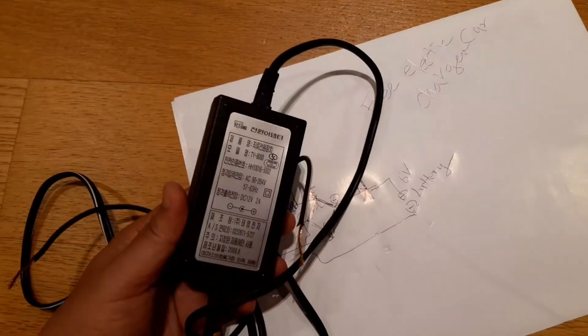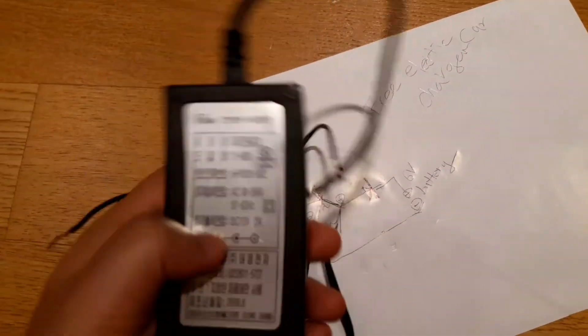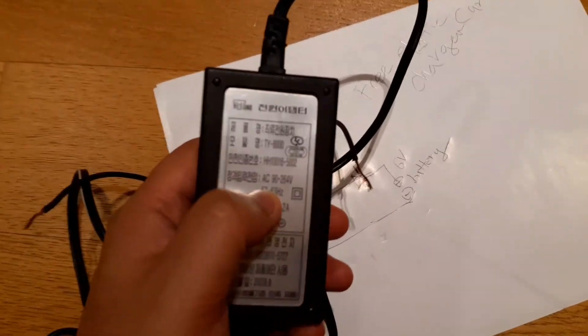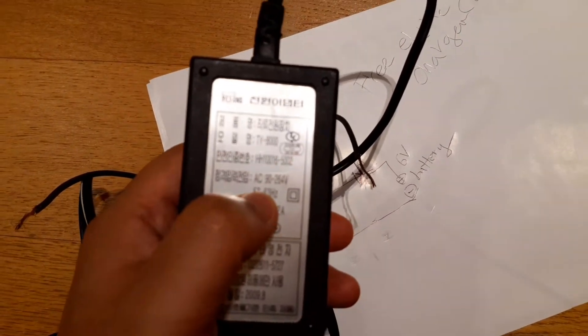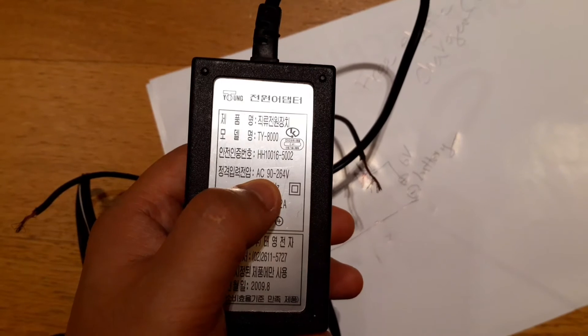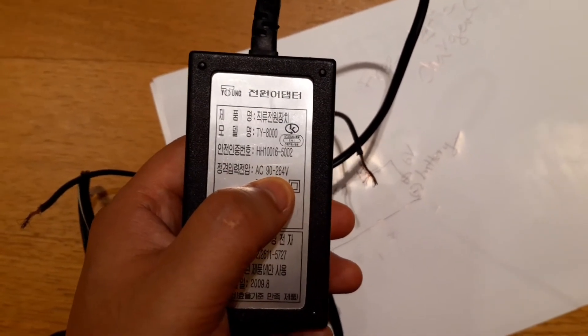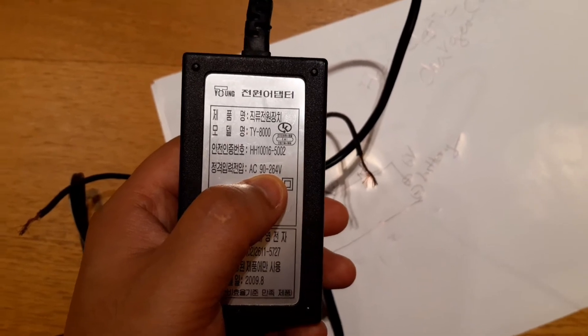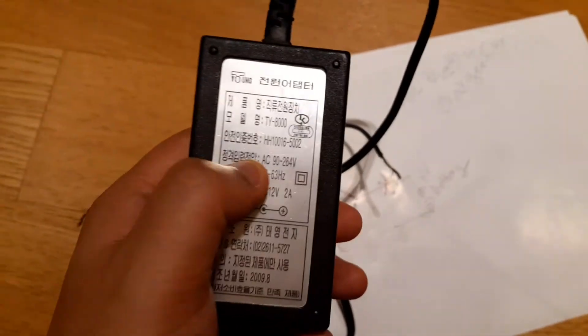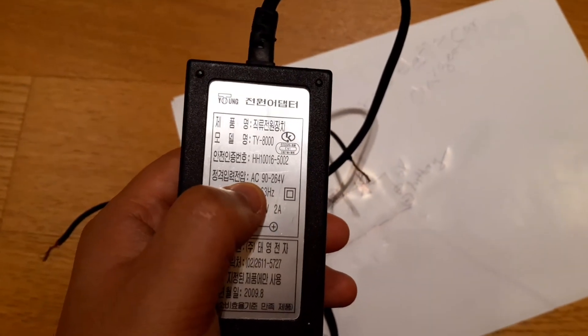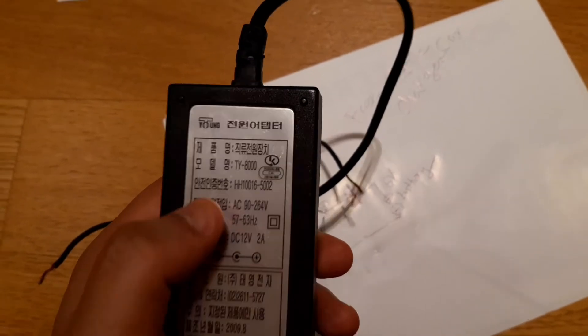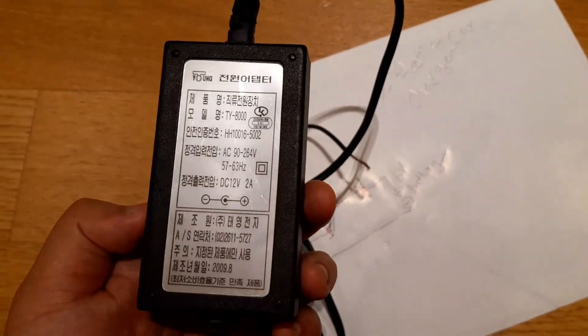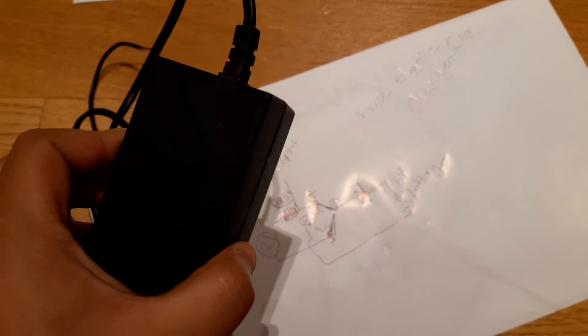One special thing about this adapter is, if you look at here, it says alternating current from 90 volts to 260 volts. Yeah, 264 volts. So even if the voltage is a little low, this adapter is able to work on that voltage.